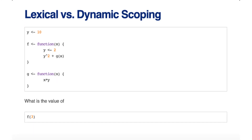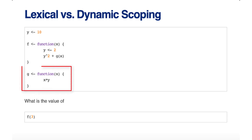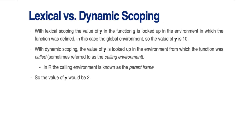Now I want to make a brief comparison between lexical scoping, which is what R does, and dynamic scoping, which some other programming languages implement. Here I assign y equal to 10, then create a function f which takes argument x, assigns y equal to 2 inside it, squares y, and adds g of x. The function g takes argument x and multiplies x times y. In f, both y and g are free variables, and in g, y is also a free variable. With lexical scoping, the value of y in g is looked up in the environment where g was defined — the global environment — so y equals 10.